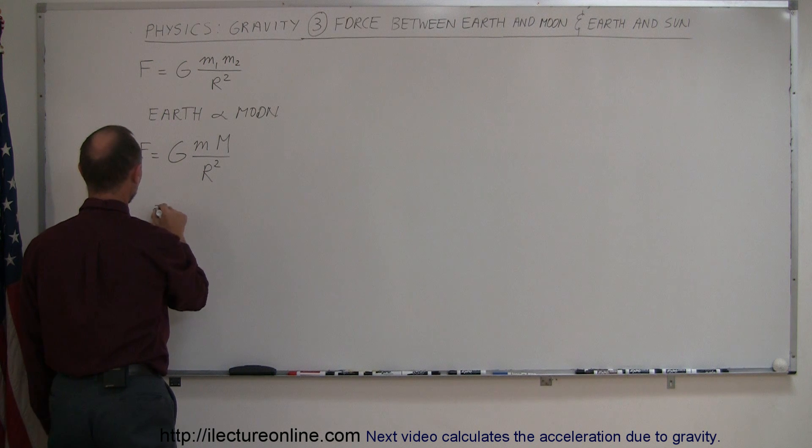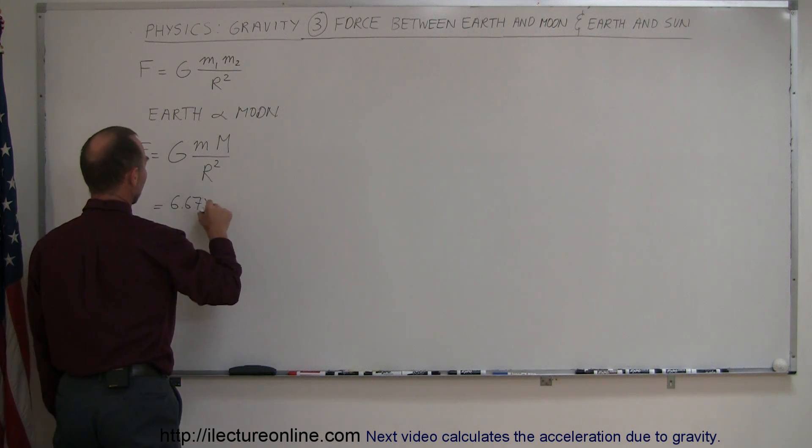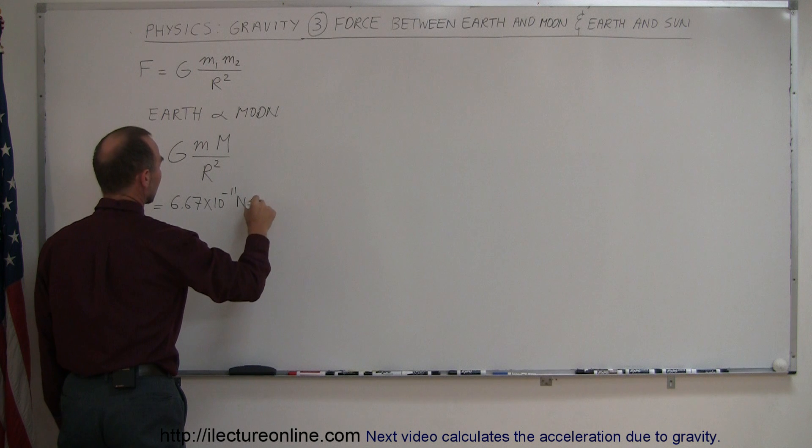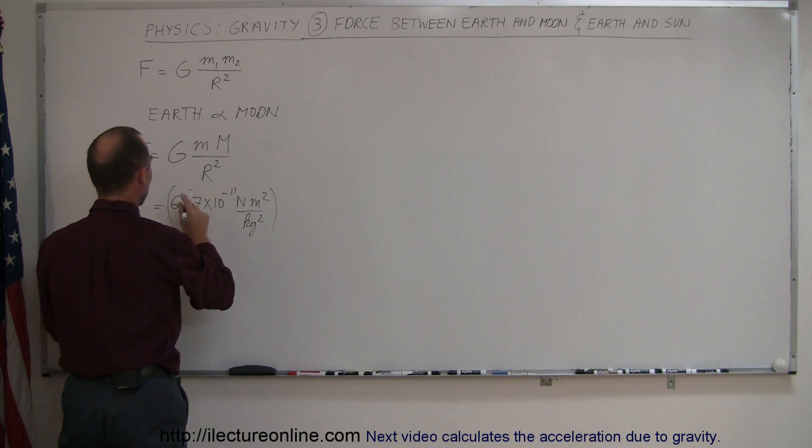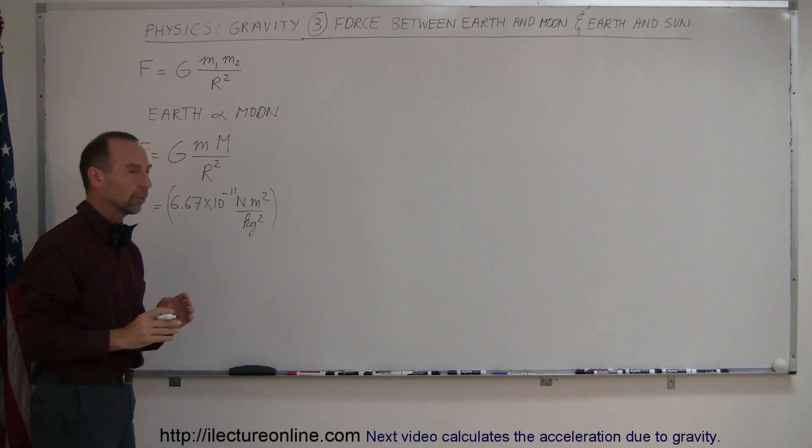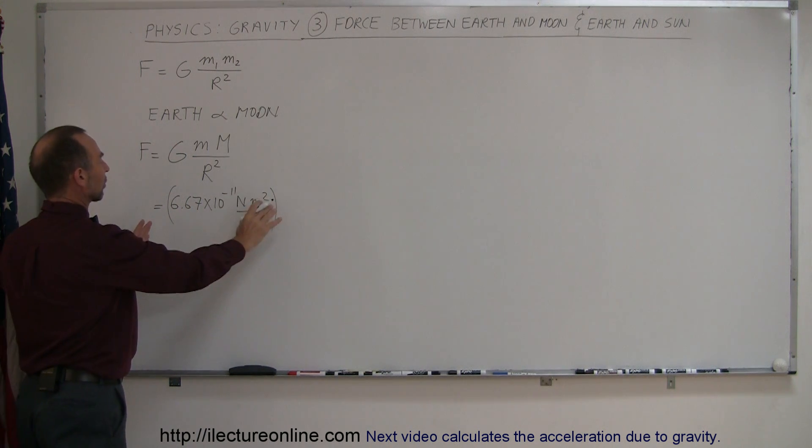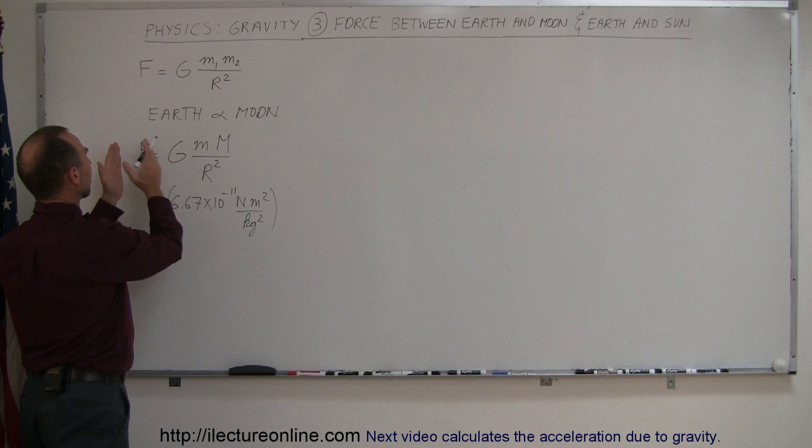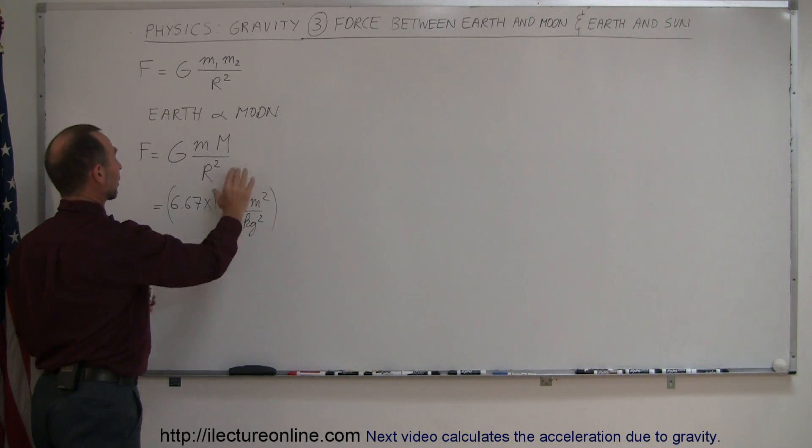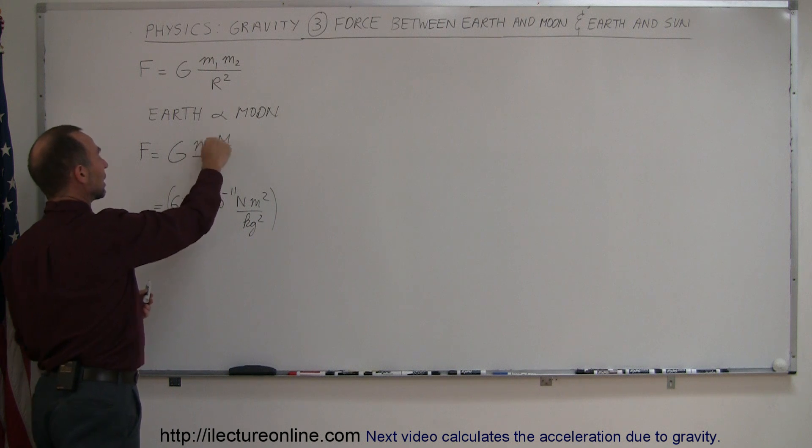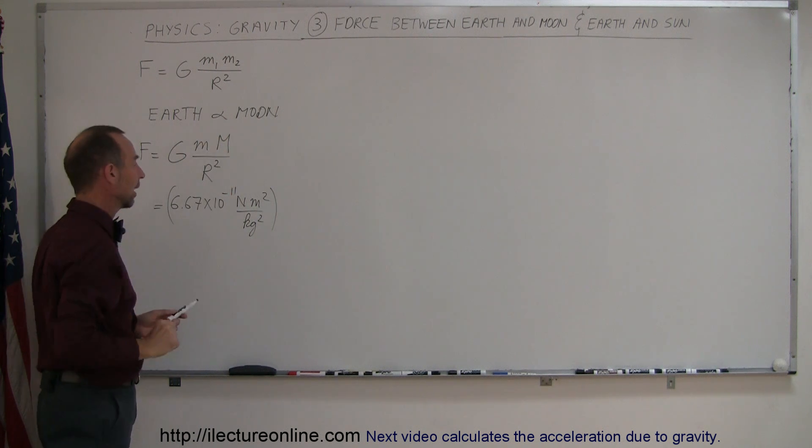Plug in the numbers. We would get 6.67 times 10 to the minus 11 newtons meters squared per kilogram squared. Remember that whenever we have a constant so that we can make an equation, the units of the constant are such that they come out to the correct unit for the variable you're looking for. In this case, we're looking for newtons, so the meters squared and kilograms squared cancel out.